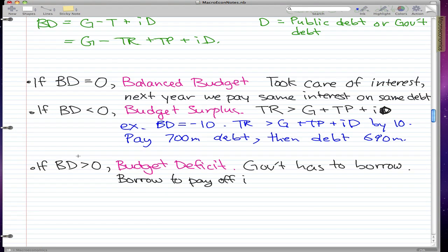If BD is greater than zero, that's a budget deficit. The government has to borrow to pay off interest payments, and in this case, debt builds.